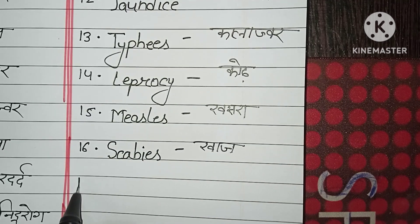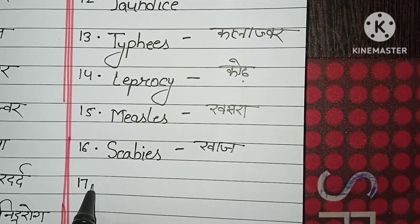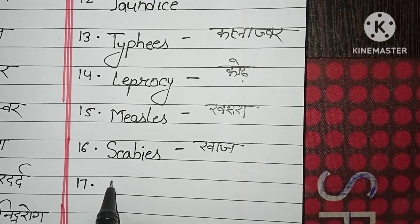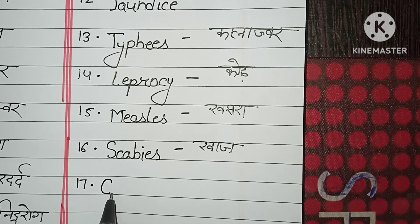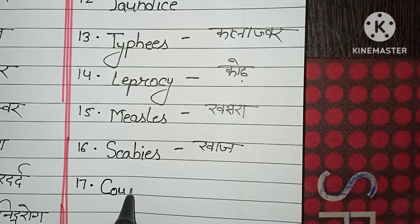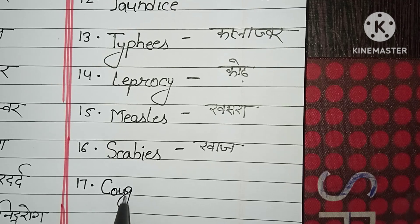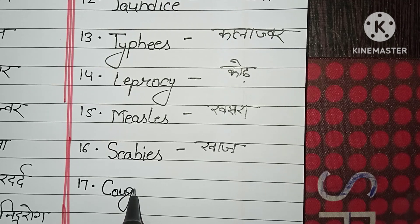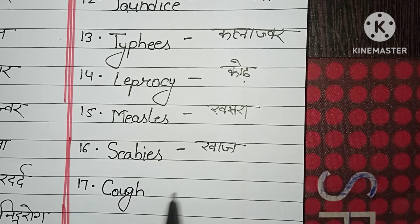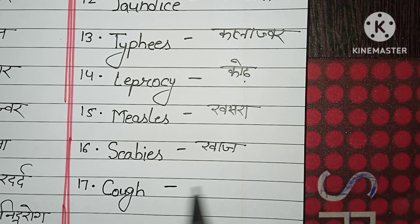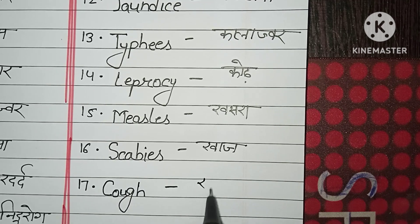Number seventeen: cough. C-O-U-G-H. Cough. Khasi.